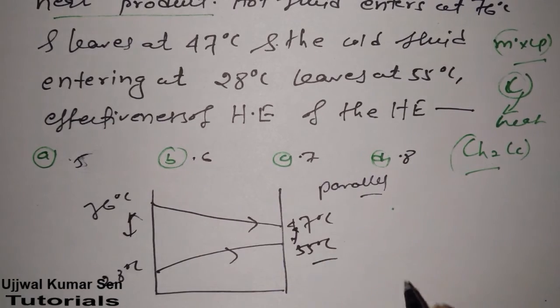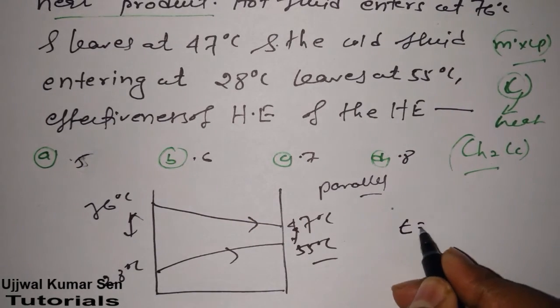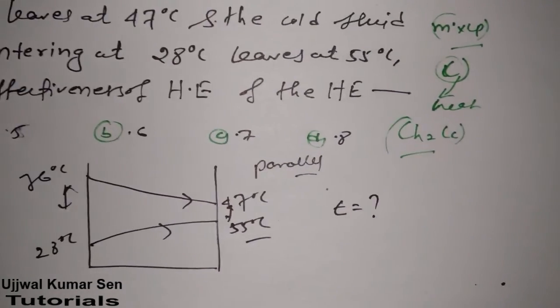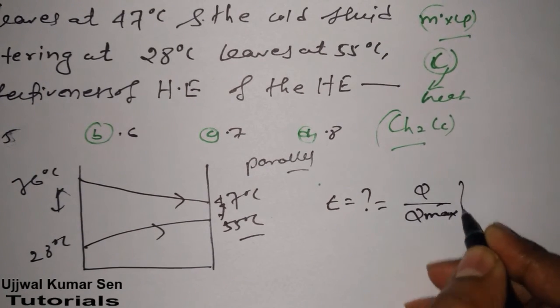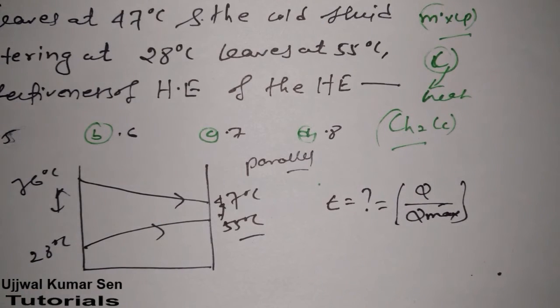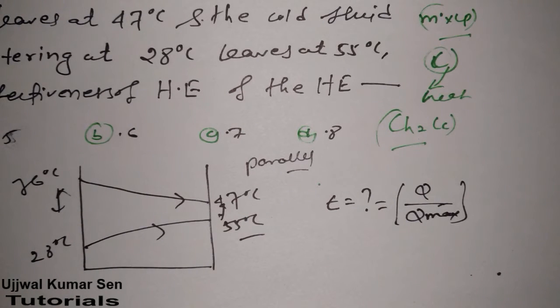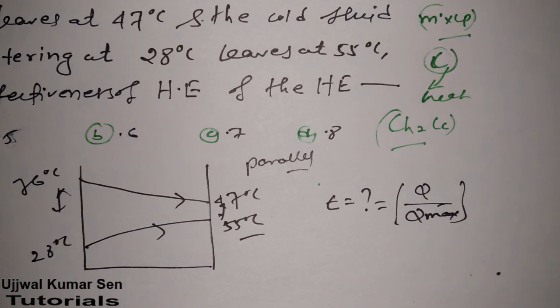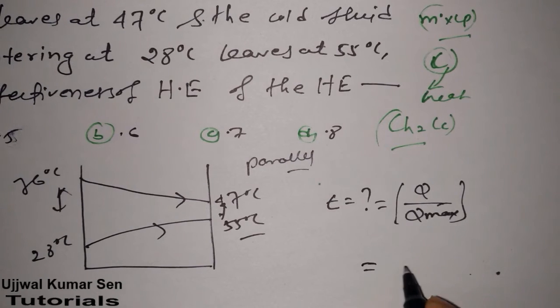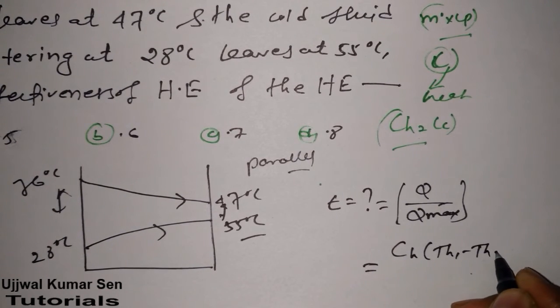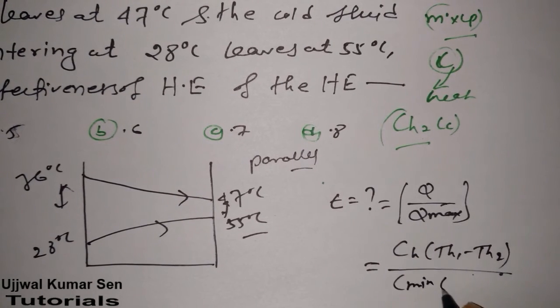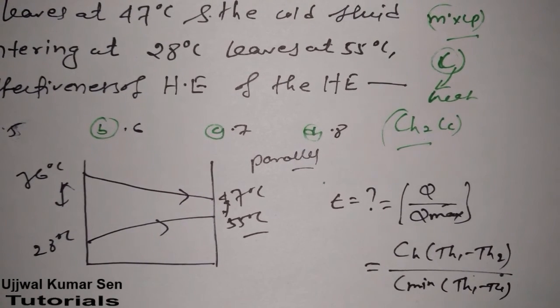We have to find out effectiveness. We know that effectiveness of heat exchanger is Q by Q max. Q is actual heat transfer rate, Q max is maximum possible heat transfer rate. The formula is CH times TH1 minus TH2, divided by C minimum times TH1 minus TC1.